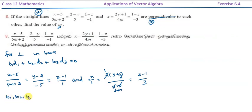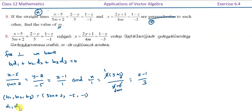Now we identify the direction ratios. For the first line, b1, b2, b3 are the denominators: 5m plus 2, minus 5, minus 1. For the second line, d1, d2, d3 are: 1, 2m, 3.